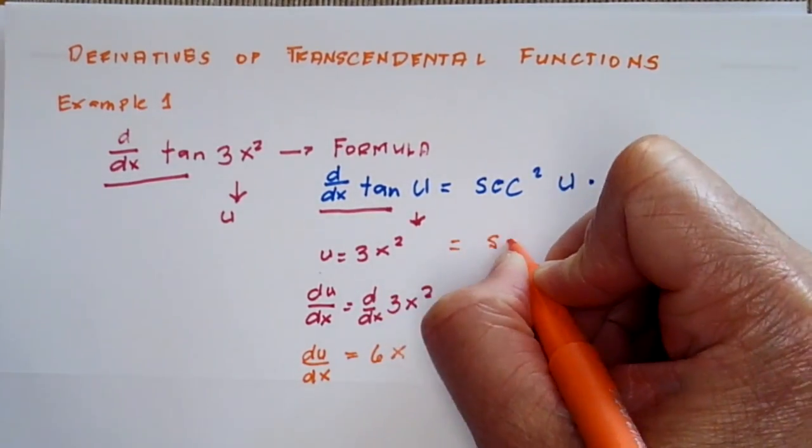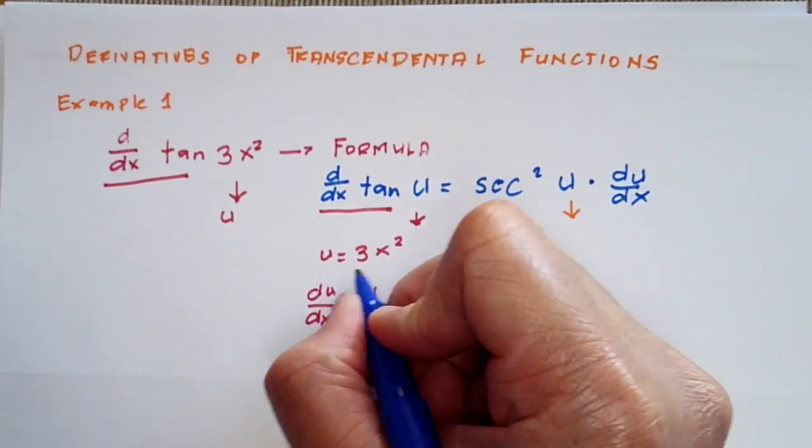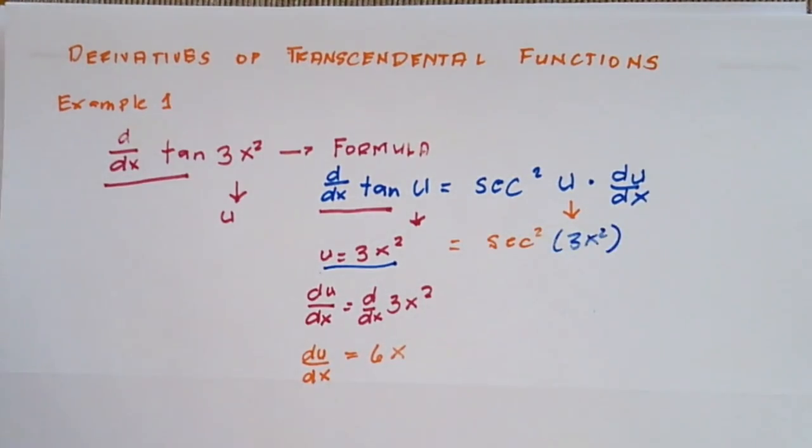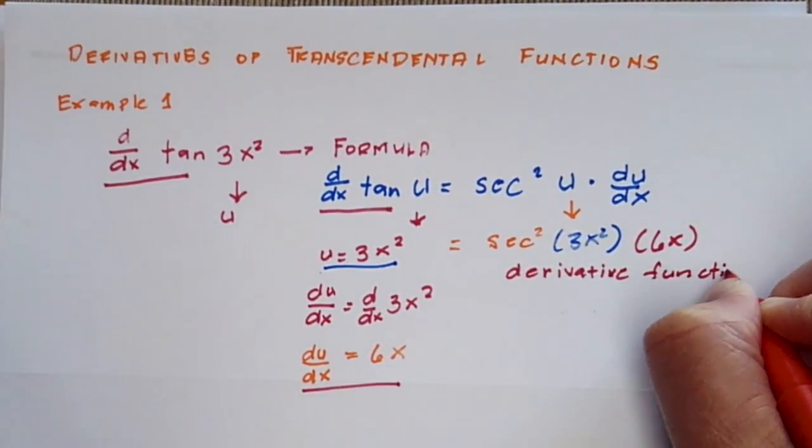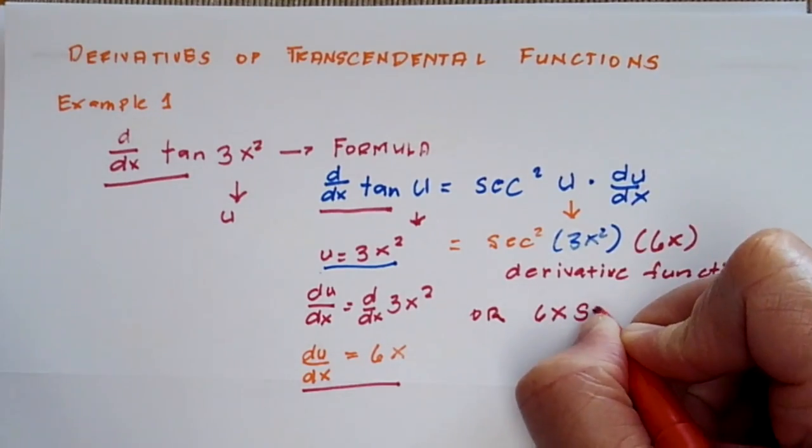By plugging in your u and du dx to your derivative formula, your derivative of tangent 3x squared will be secant squared 3x squared times 6x, or in standard form, 6x secant squared 3x squared.